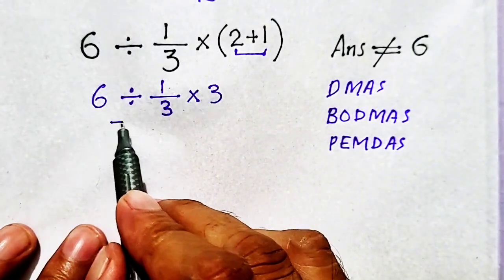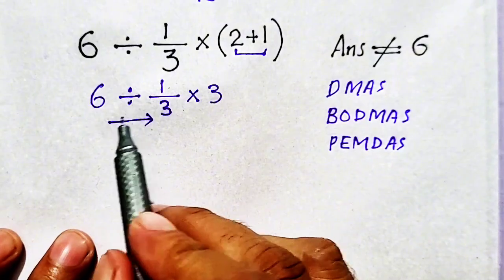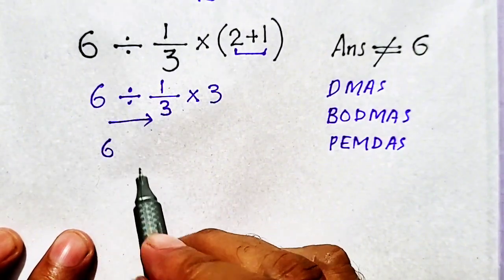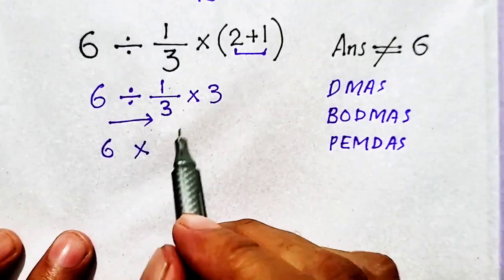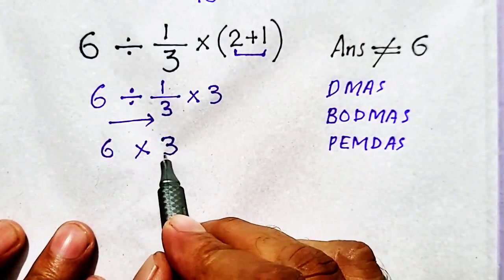So, first of all, we have to move from left to right, and we have to solve this division. So, 6 as it is, divide is changed into multiplication, and 1/3 is flipped, so it will become 3.